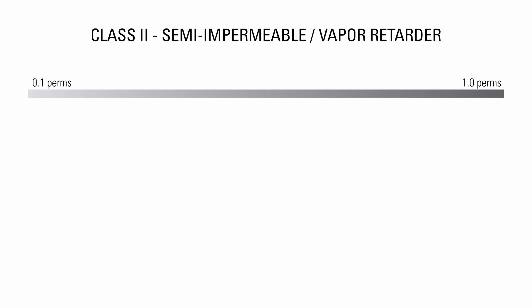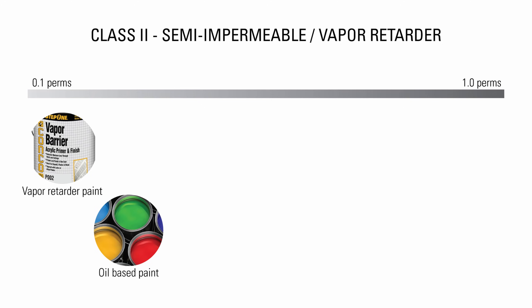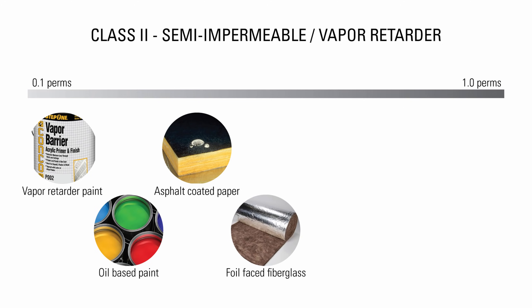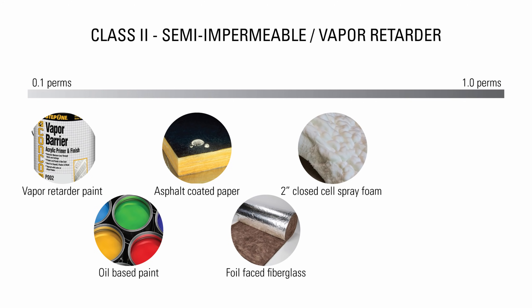The second classification includes materials with 0.1 to 1.0 perms. They are considered semi-impermeable to water vapor. This includes vapor retardant paint, oil based paint, asphalt coated paper, foil faced fiberglass, 2 inches of closed cell spray foam, 1 inch of XPS and kraft paper insulation.